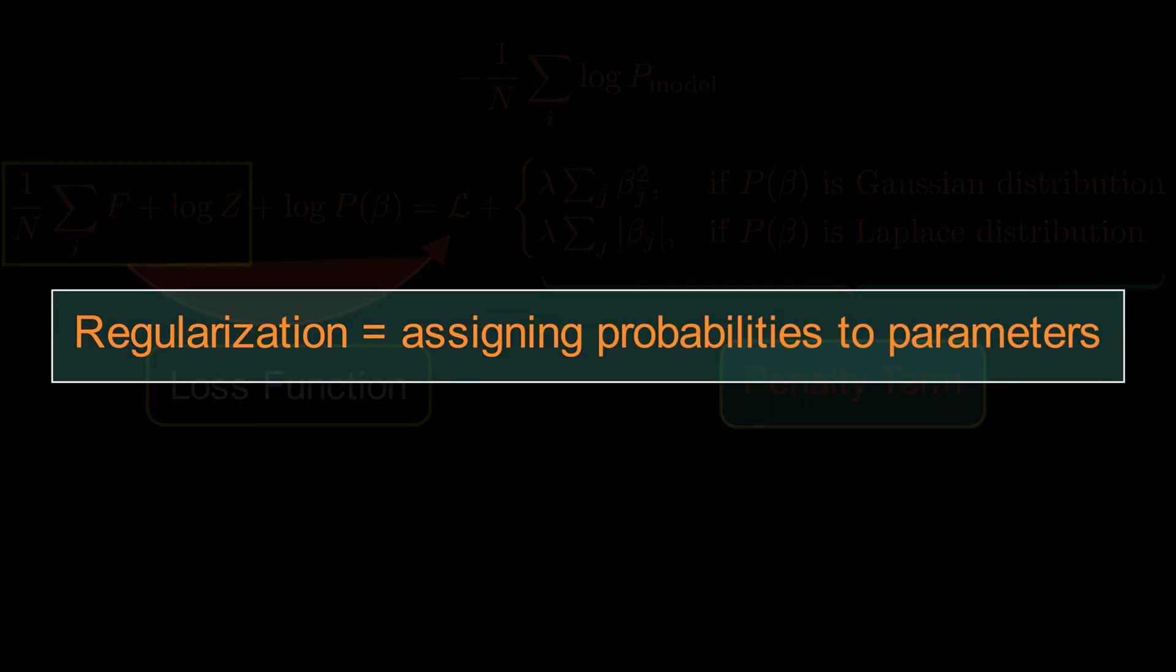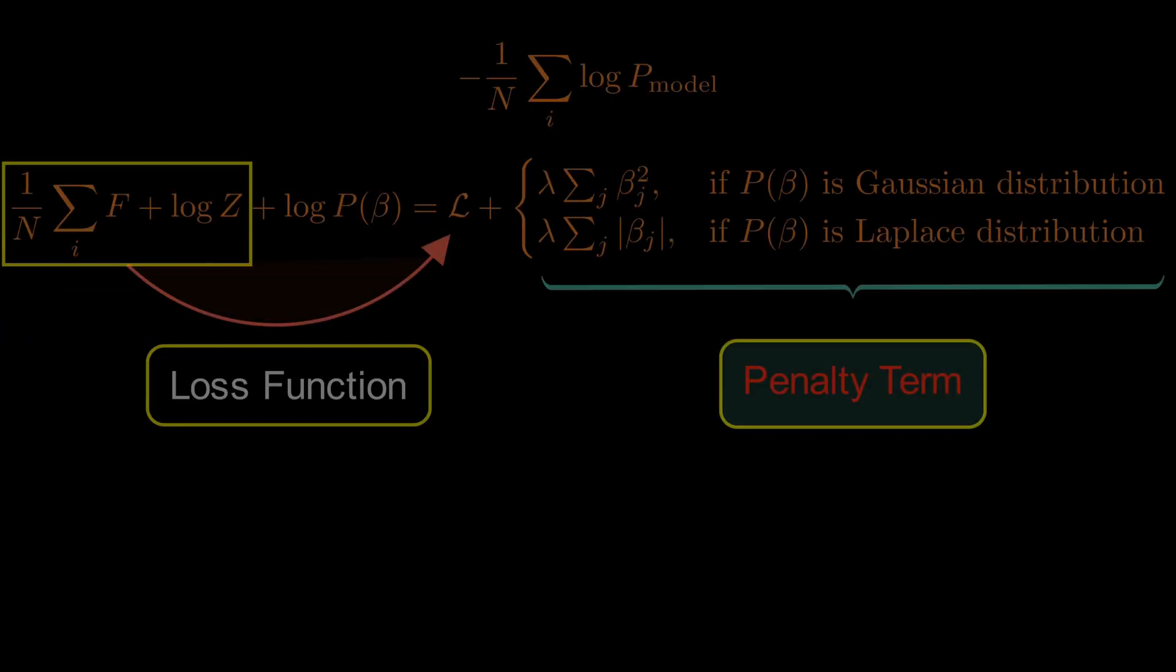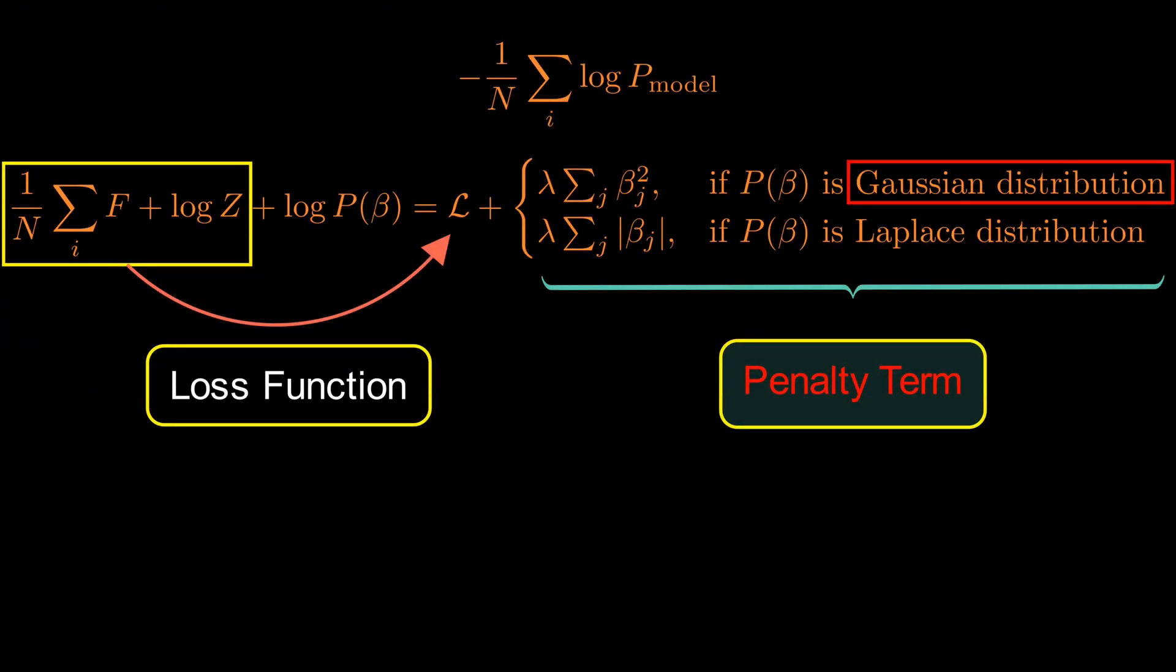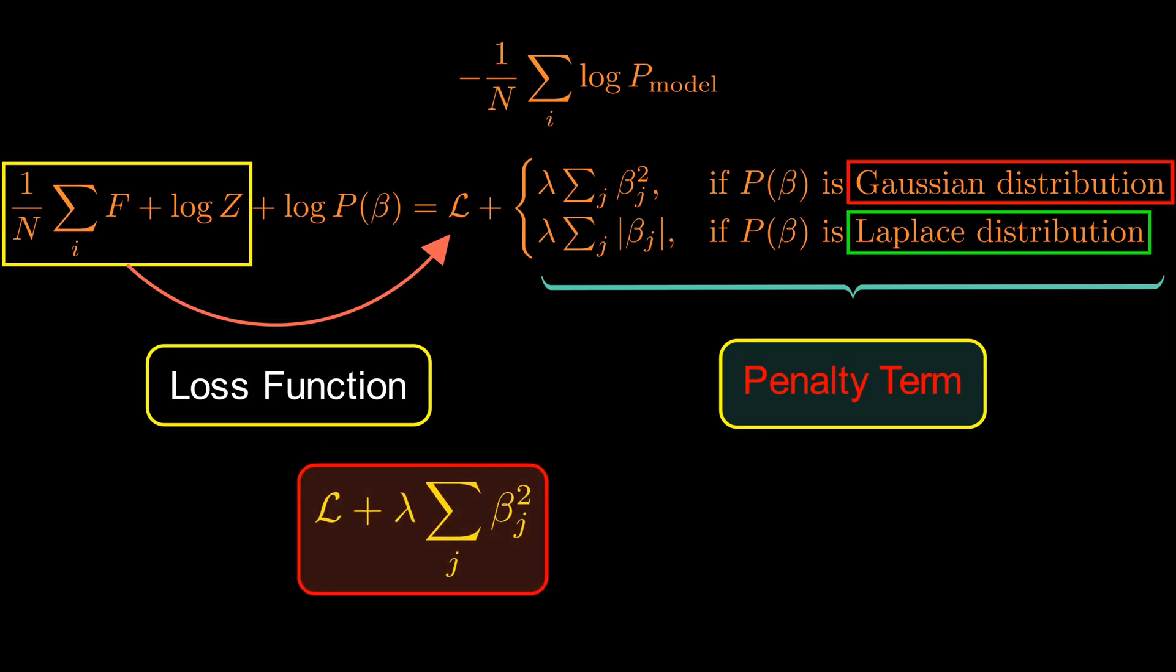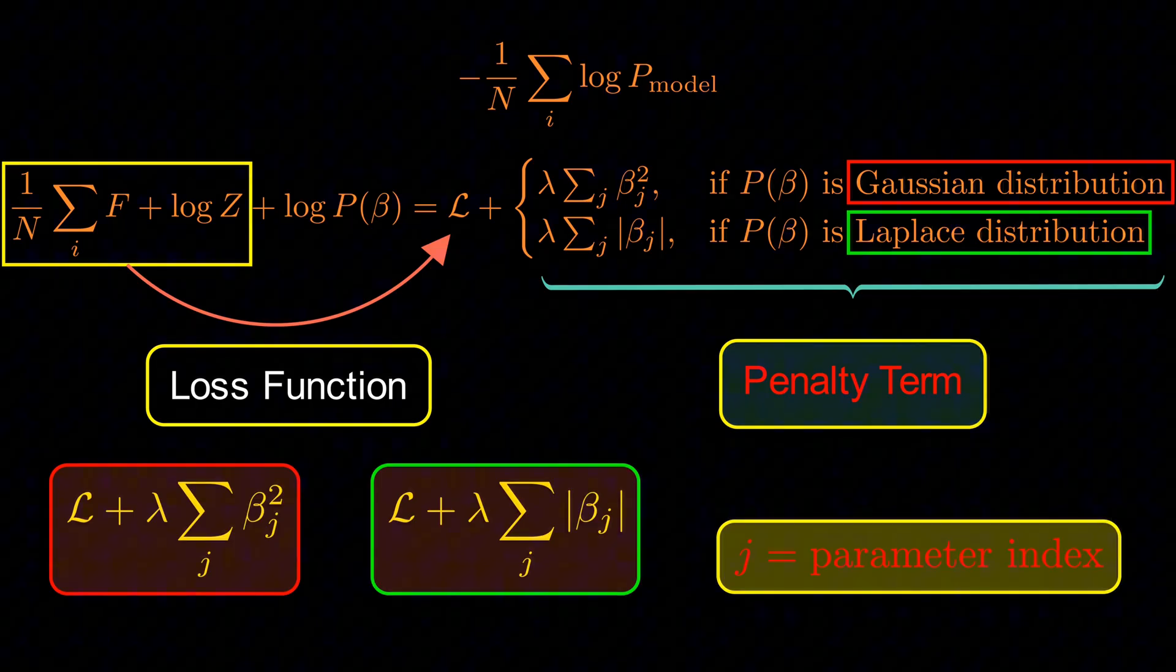Regularization is simply the introduction of probability distributions on the parameters. Thus, if we assume a Gaussian distribution for the parameters of our machine learning model, our loss function to be minimized receives the following correction, and for Laplace distribution of the parameters, we minimize the following where J indexes the components of the parameter vector beta.